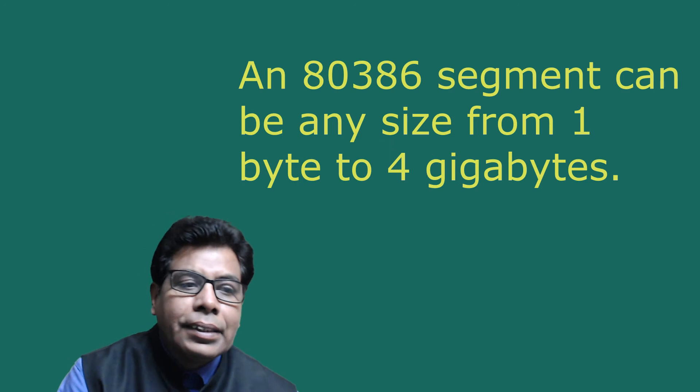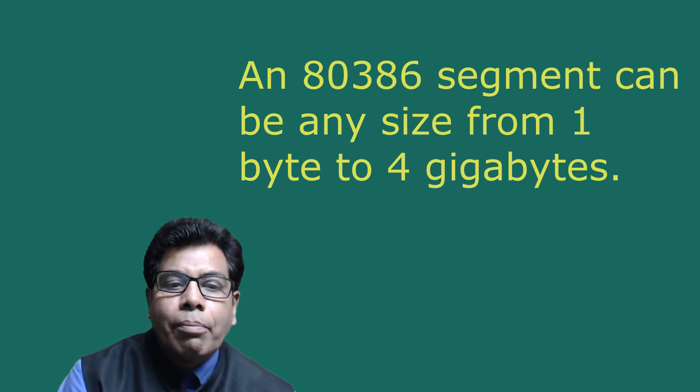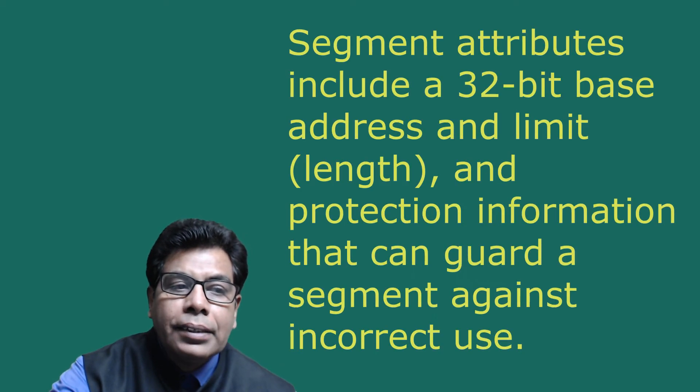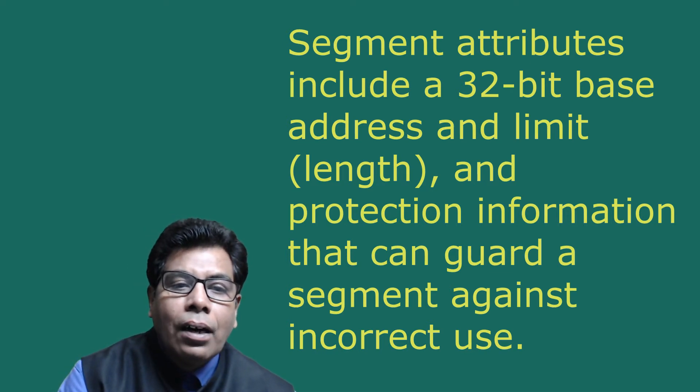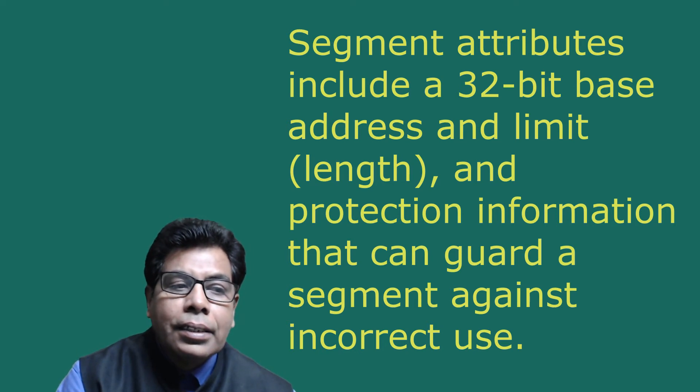An 80386 segment can be any size from 1 byte to 4 gigabytes. For every segment, the operating system maintains an architecture-defined descriptor that specifies the attributes of the segment. Segment attributes include a 32-bit base address, a limit or length, and protection information that can guard a segment against incorrect use. Application programs deal only indirectly with descriptors, referring to segments by means of logical addresses.